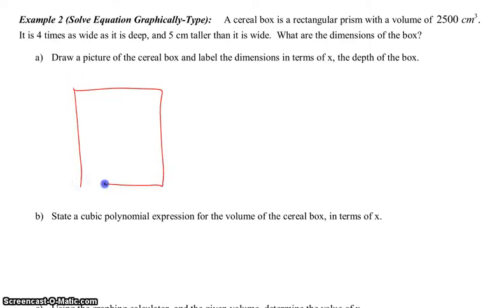So, let's draw a picture here. Always a good place to start. Here's our cereal box. Call this Smartios. And, they want to label the dimensions in terms of X, the depth of the box. So, we're going to make the depth of the box X, mostly because it's kind of referring to things in terms of X. So, it's four times as wide as it is deep, the depth. So, the width here, therefore, would be four times X. So, four X. And, then they tell you that the height, or how tall it is, is five centimeters taller than it's wide. So, it was four X wide. So, this would be four X plus five tall. So, we've got that labeled.